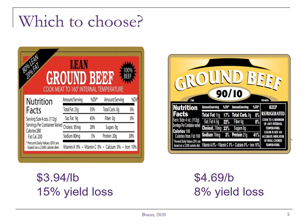So which would you choose? Ground beef has varying levels of fat. Federal law states that ground beef can never be less than 70% lean. On the left, the product is 80% lean, 20% fat, and on the right we've got 90% lean, 10% fat. The price and yield loss are shown on the bottom. You can clearly see the nutrition facts. So which one of these two would you purchase and why?